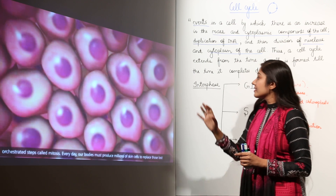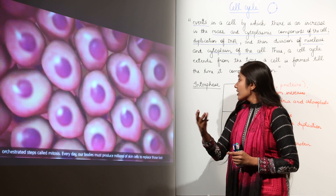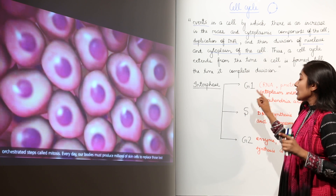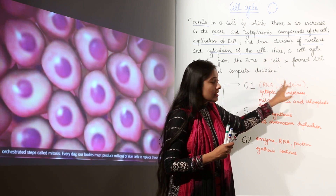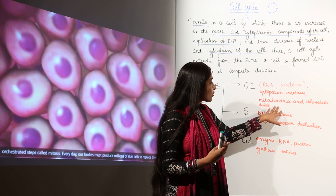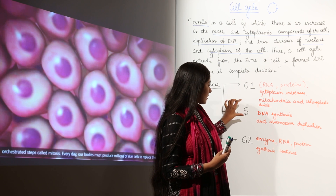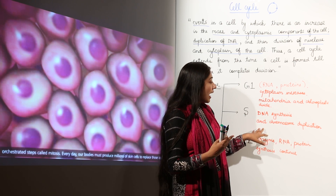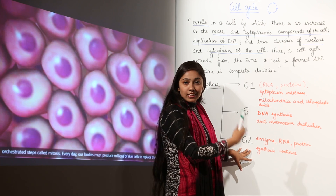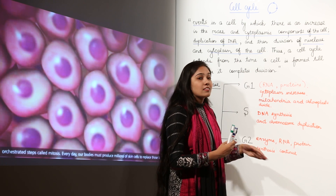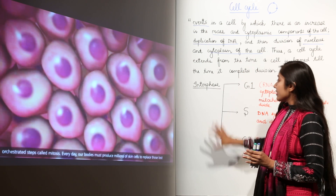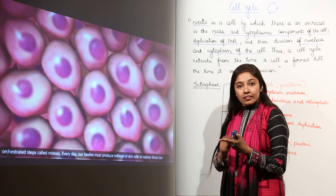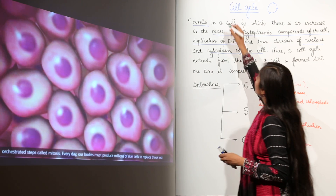The first phase of the cell cycle is interphase, which is divided into three sub-phases: G1 phase, S phase, and G2 phase. G1 is the first growth phase in which RNA and proteins are synthesized and cytoplasmic volume increases, followed by mitochondria and chloroplast division. The S phase, or synthesis phase, is where DNA synthesis occurs and chromosome duplication takes place. After that, the G2 phase involves continued enzyme, RNA, and protein synthesis, and then the cell enters the mitotic phase with prophase, metaphase, anaphase, and telophase. Let us study the cell cycle with the help of an animation.